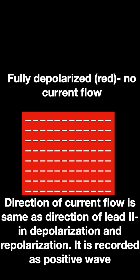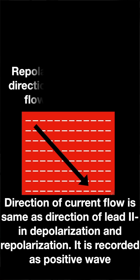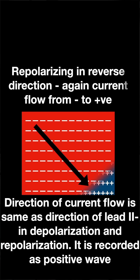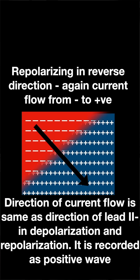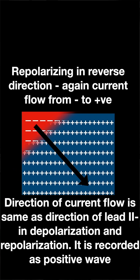When repolarization starts, the area which is last to depolarize is the first to repolarize. The direction is always figured out from negative to positive. So the direction of repolarization is the same as the direction of depolarization, and the same as the direction of Lead 2 — so we get a positive wave during ventricular repolarization, which is the T wave.